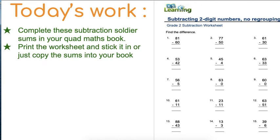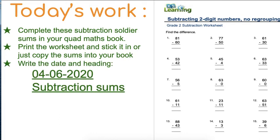So like I said, you can print the worksheet and stick it in your book, or just copy the sums into your book. Write the date and heading, which is 04-06-2020, and subtraction sums and underline it. And you're more than welcome to continue using your yellow and your green to help you write the columns, or to color in the columns on the worksheet.